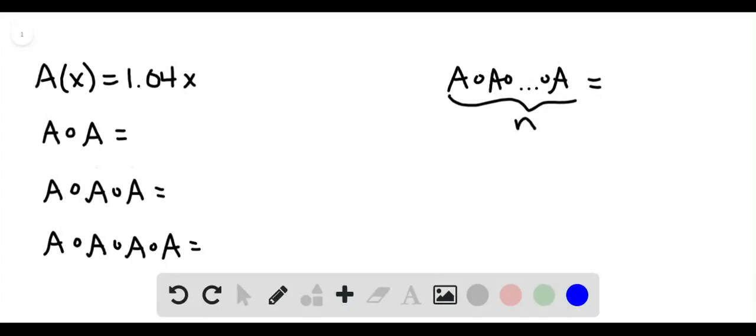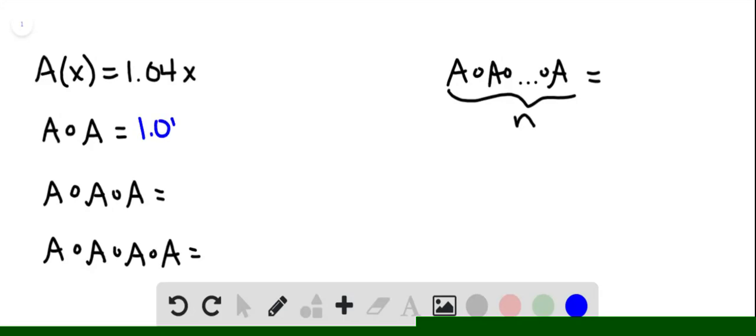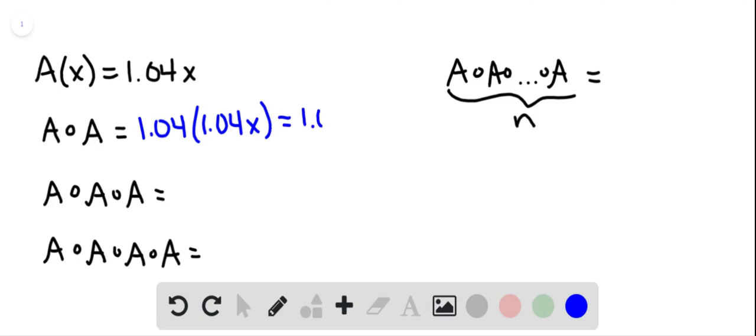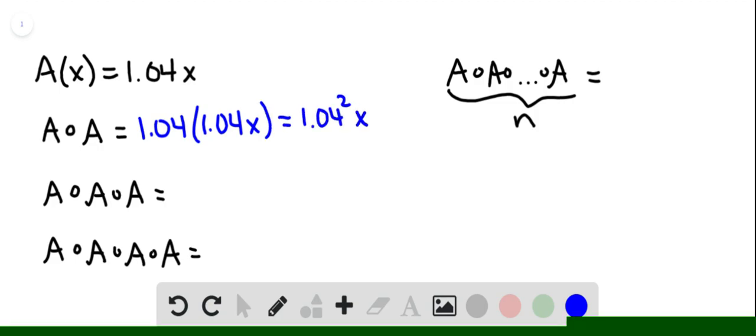All right, we start with A(x) equals 1.04x and then we find A of A. So that would be 1.04 times 1.04x and that's the same as 1.04 squared times x.